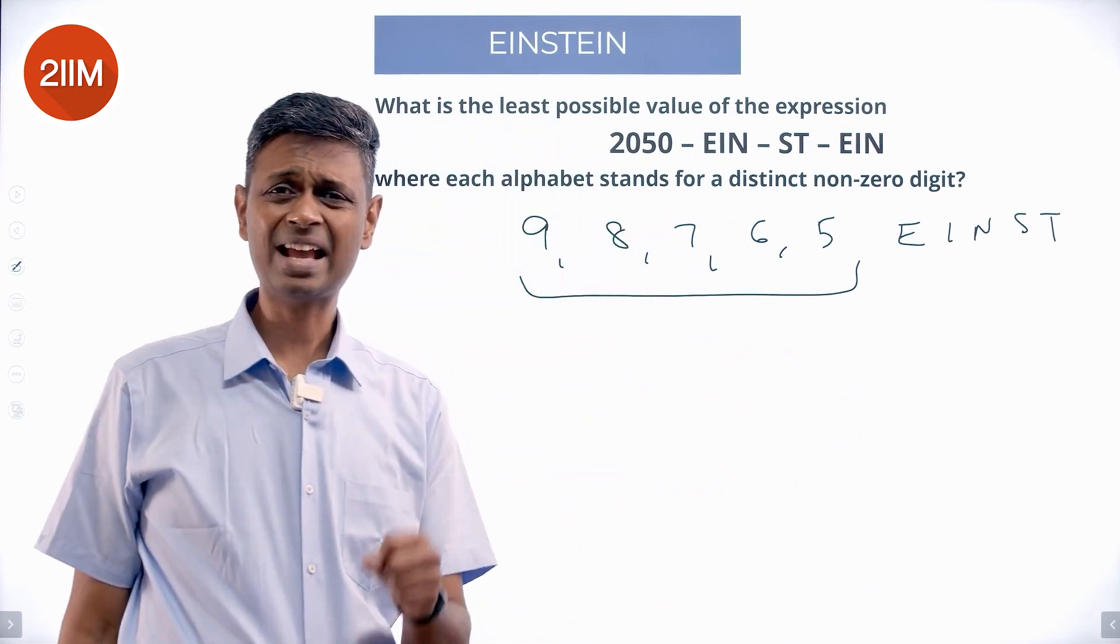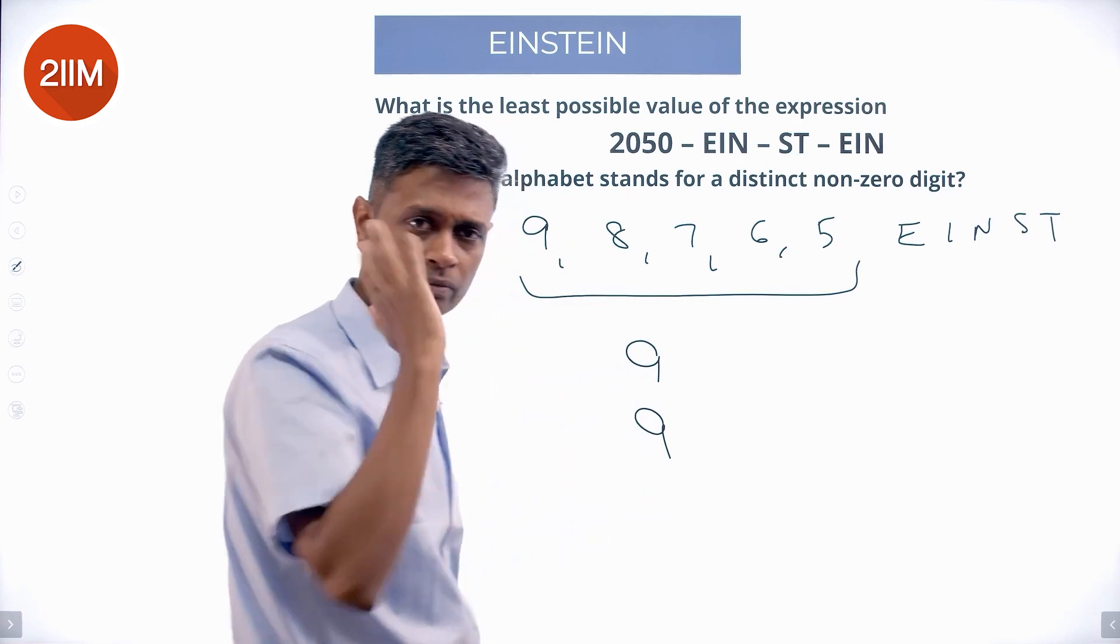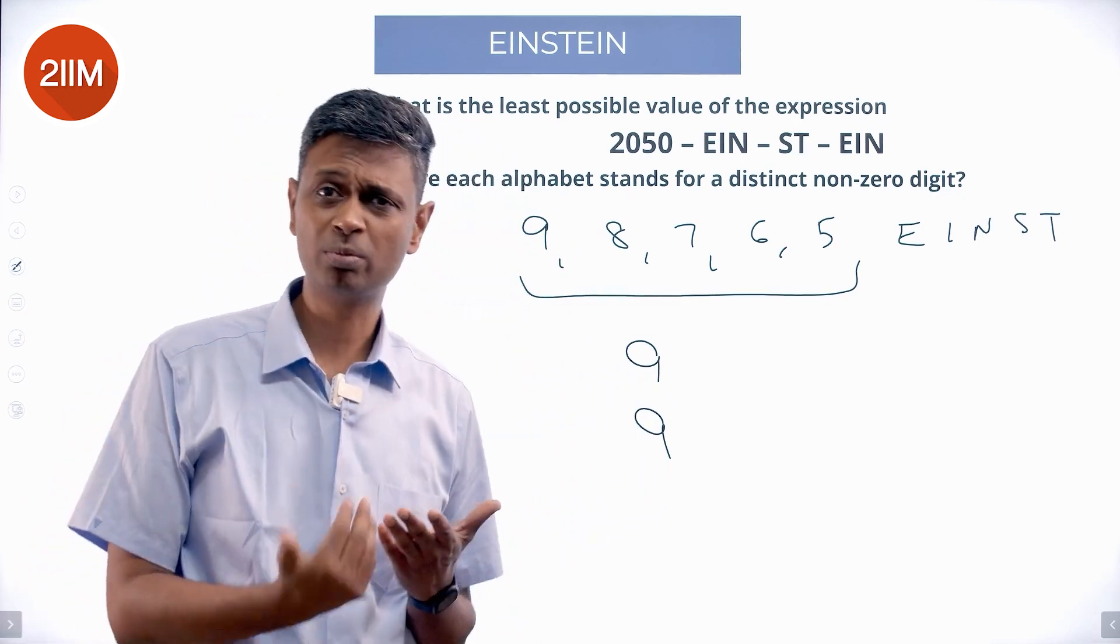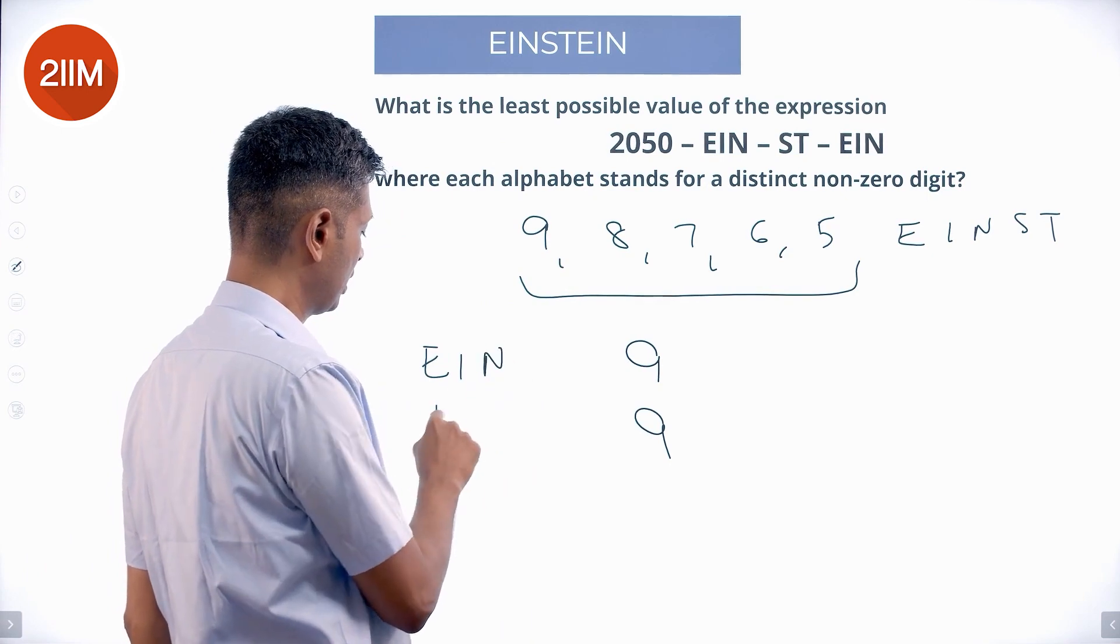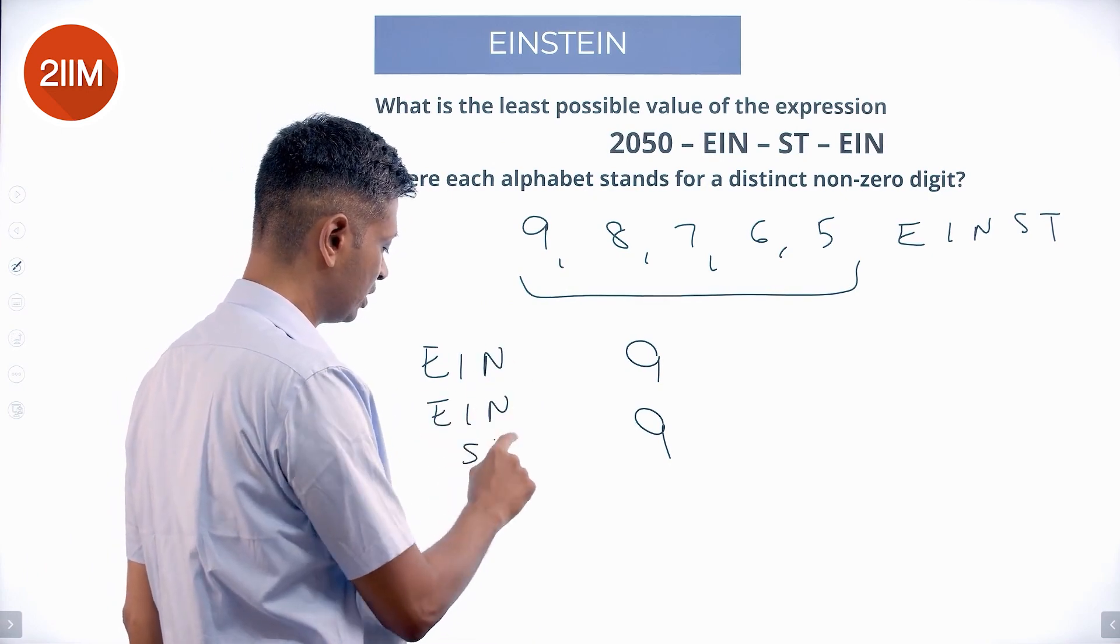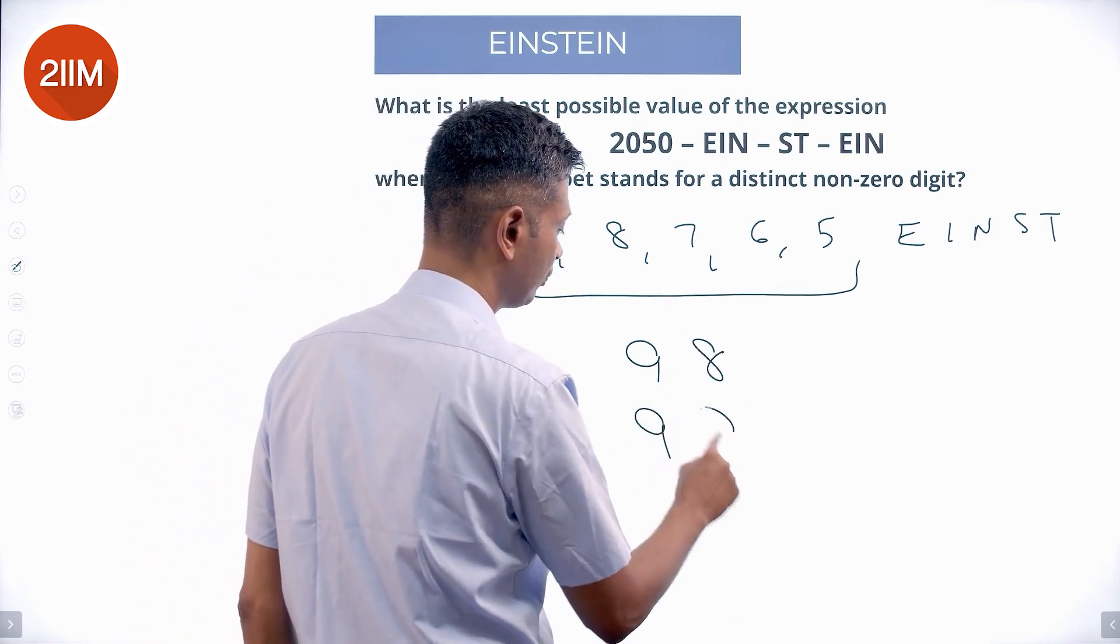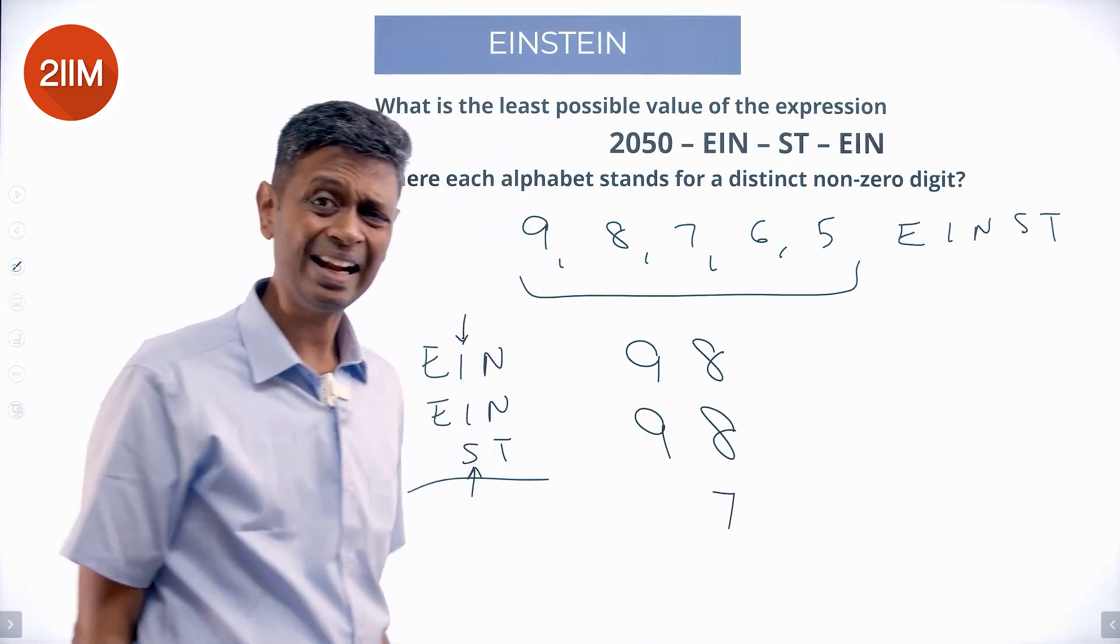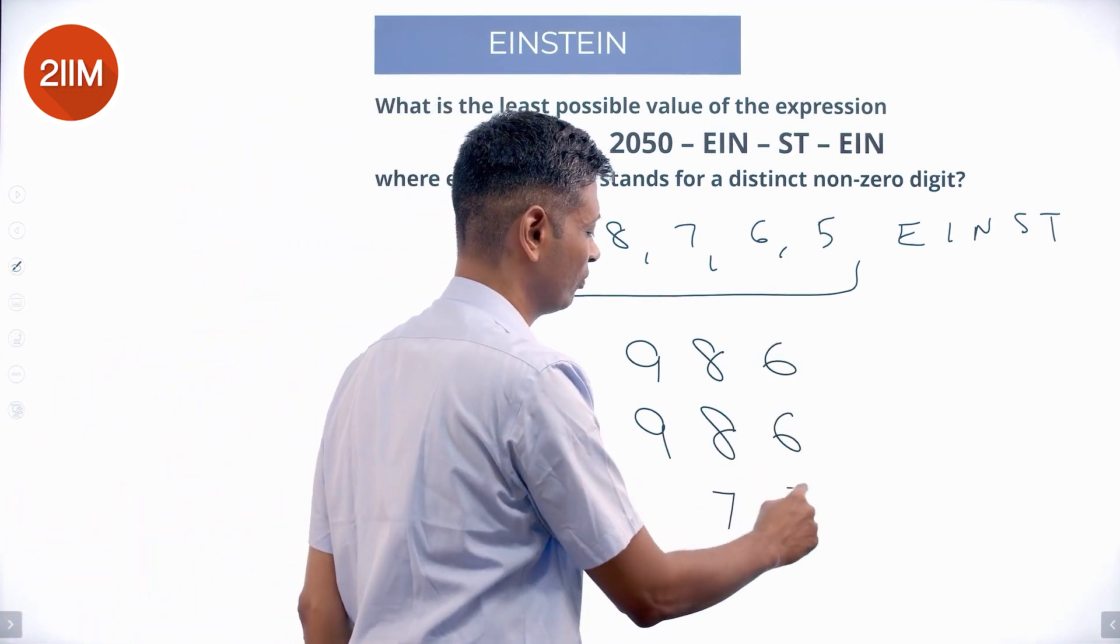One thing is very clear: E has to be 9 because it's in the hundreds place. Then we come to the tens place. In tens place we have I from EIN and S from ST. This I sits in the tens place, this S also sits in the tens place, so put 8 and 7. Then we come to the units place - best possible 6, 6, 5.